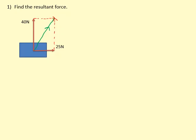I want to find the size of that resultant and the angle, because it's a vector so you need to give the direction as well. To find the hypotenuse, you can use Pythagorean theorem. You have the two sides of the right angle triangle: 25 squared plus 40 squared, then square root that, which gives us 47 Newtons.